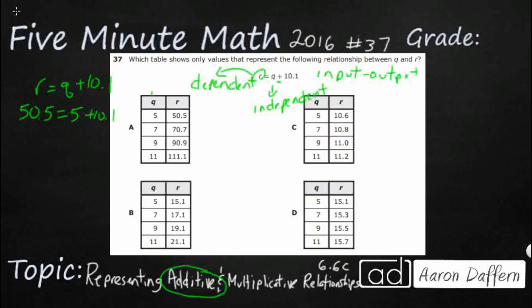And does that work? Well, let's kind of collapse this a little bit here. 5 plus 10.1, that is going to be 15.1. And 15.1 definitely does not equal 50.5. So it doesn't look like it is going to be A.